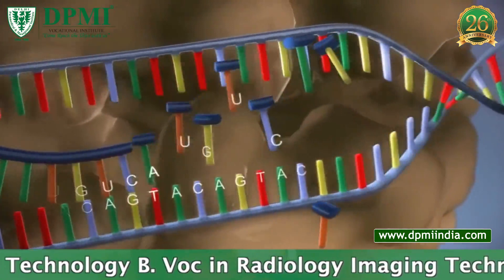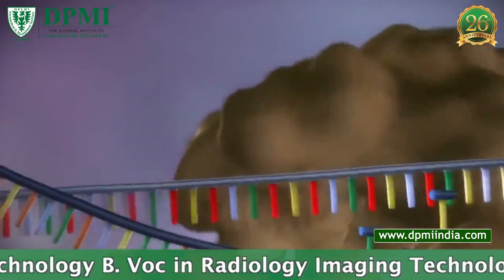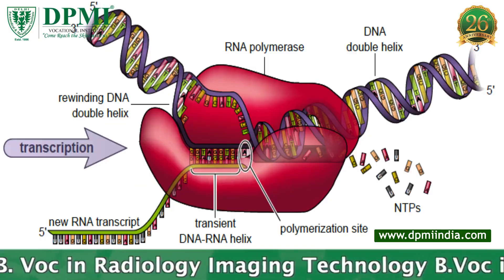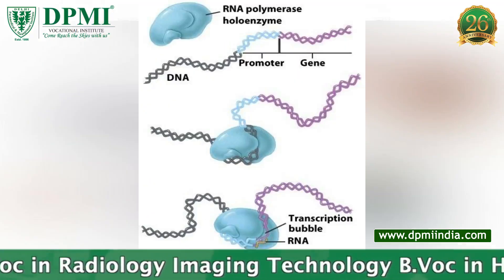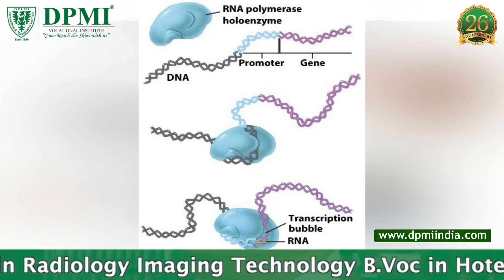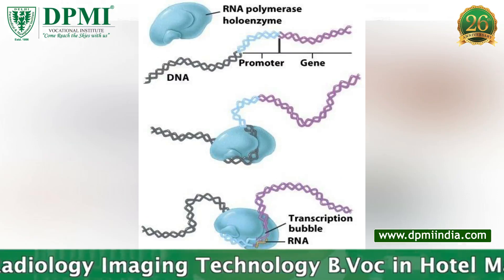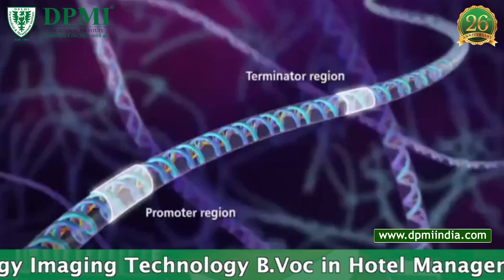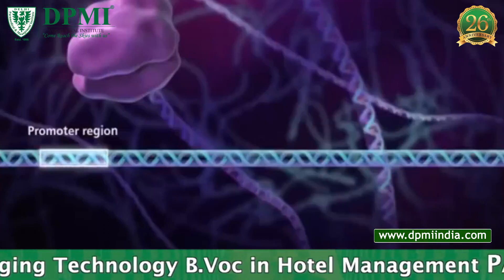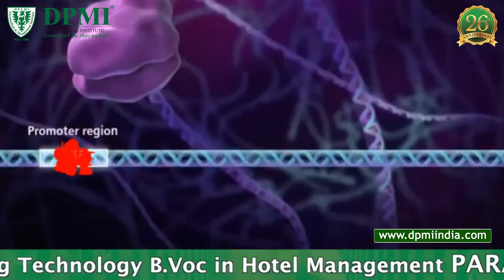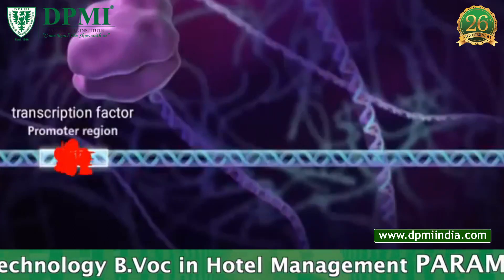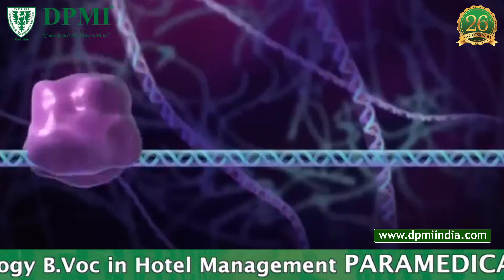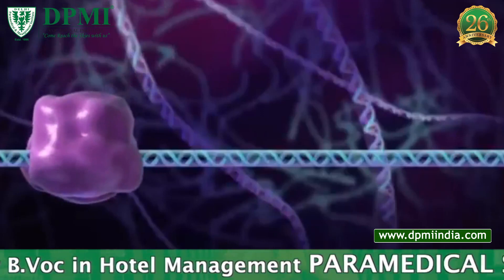A complementary strand of mRNA is synthesized from a strand of DNA. RNA polymerase binds to the promoter sequence of a gene to initiate transcription. As a result, unwinding of DNA occurs so that the enzyme is able to read the bases of DNA.